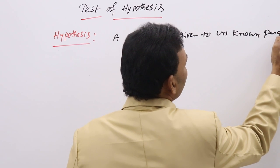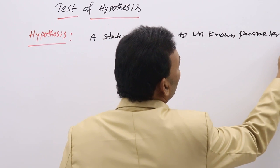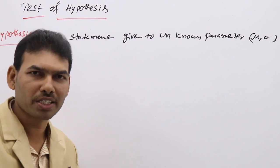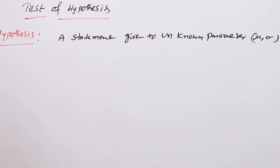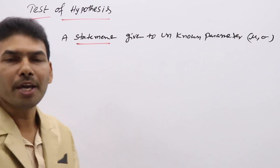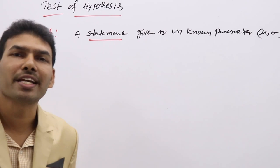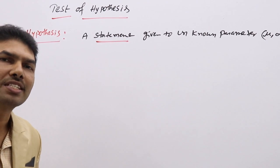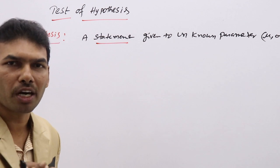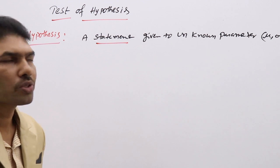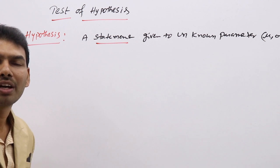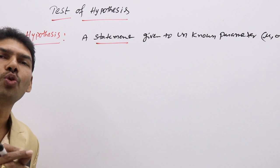Parameter means mu, sigma — population related measurements like population mean and population SD. Hypothesis is a statement, and a statement is a sentence which is either true or false, but not both. So hypothesis means simply one sentence. Now we need to decide whether it is true or false.